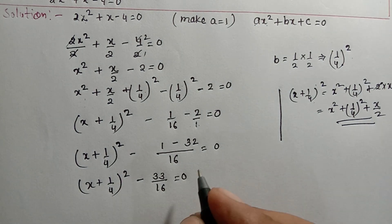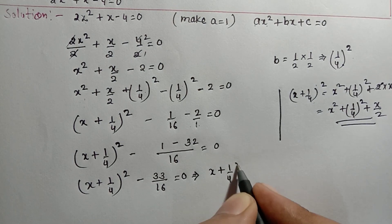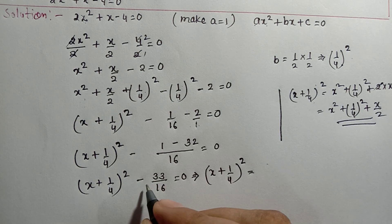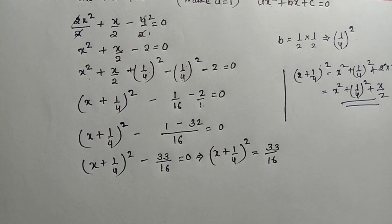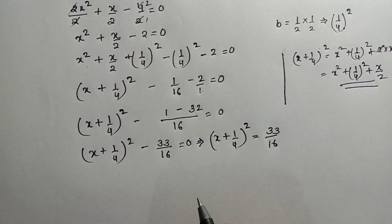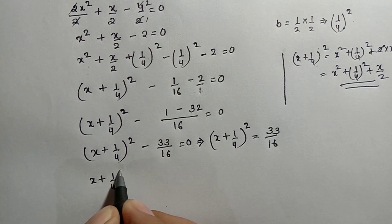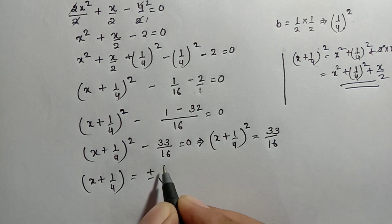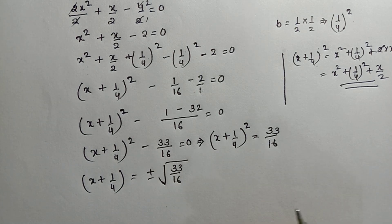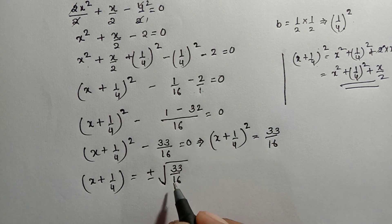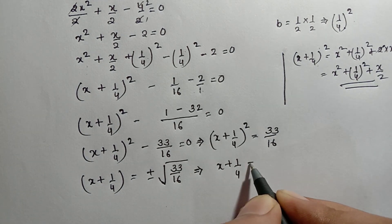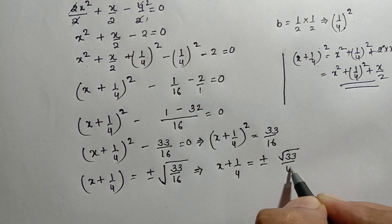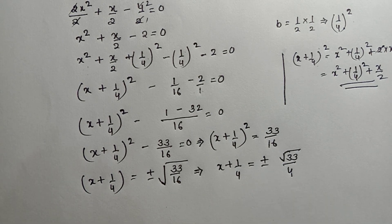Now we transfer the square to the other side. When a square moves to the other side, we take ±√ of the right-hand side. So: x + 1/4 = ±√(33/16) = ±√33/4. Note that √33 cannot be simplified further as 33 is not a perfect square. So x + 1/4 = ±√33/4.